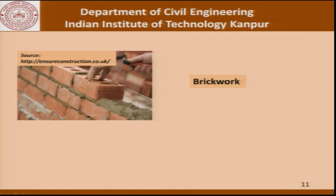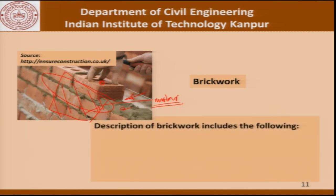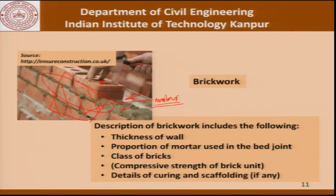Moving on to brickwork — this picture shows brickwork being carried out. It involves placing bricks in layers with a bed joint typically filled with mortar. We need to specify the composition of the mortar, the thickness of the brick wall, and sometimes the strength or quality of the masonry unit. The brickwork description could include the thickness of the wall, the proportion of mortar in the bed joint, the class of bricks to be used, the compressive strength of the brick unit, and details of curing and scaffolding if necessary.